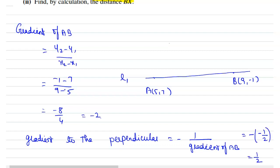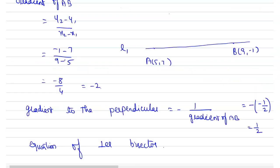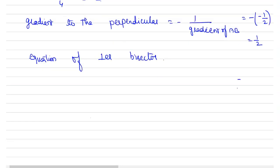From this we can find the equation of the perpendicular bisector. For this, find the midpoint of A and B. The midpoint is ((5 + 9)/2, (7 − 1)/2), which gives us (7, 3). Now the equation of the perpendicular bisector is y − y1 = m(x − x1).